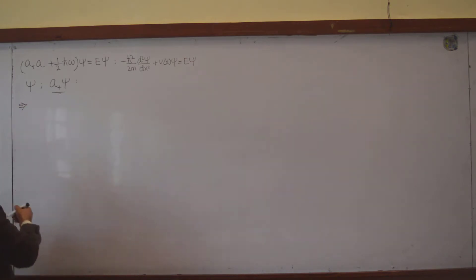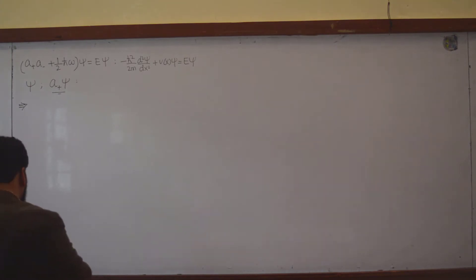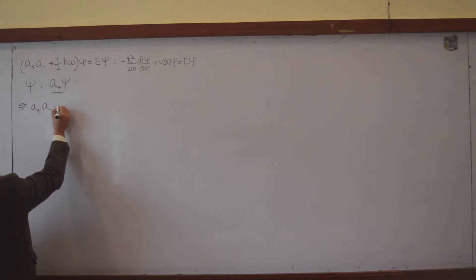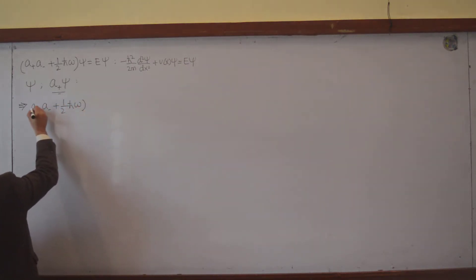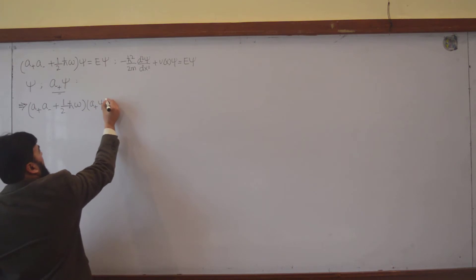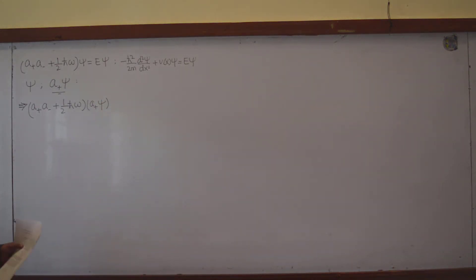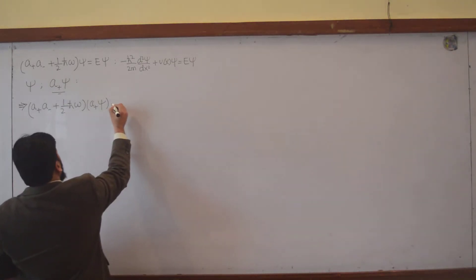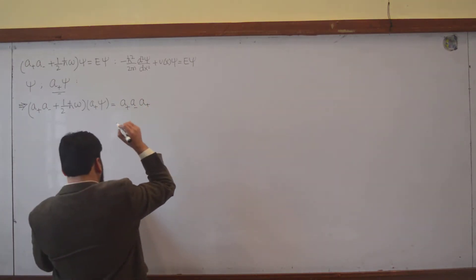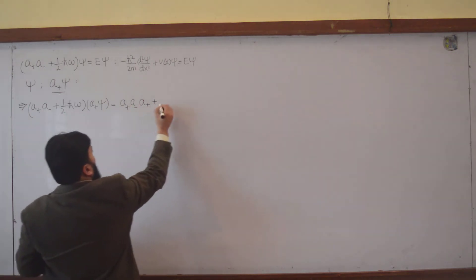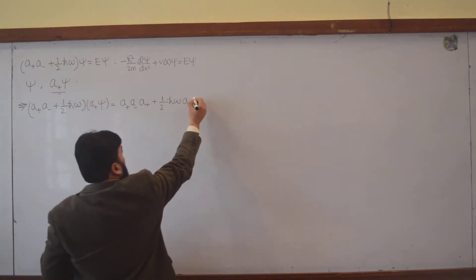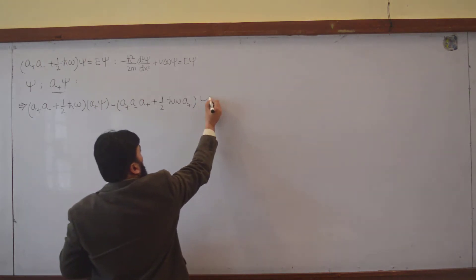This implies that (a₊a₋ + ½ℏω) applied to a₊ψ. So we write: a₊ · (a₋a₊ + ½ℏω) · ψ — that is, a₊ is taken as common, and the remaining operators act on ψ combined with a₊.